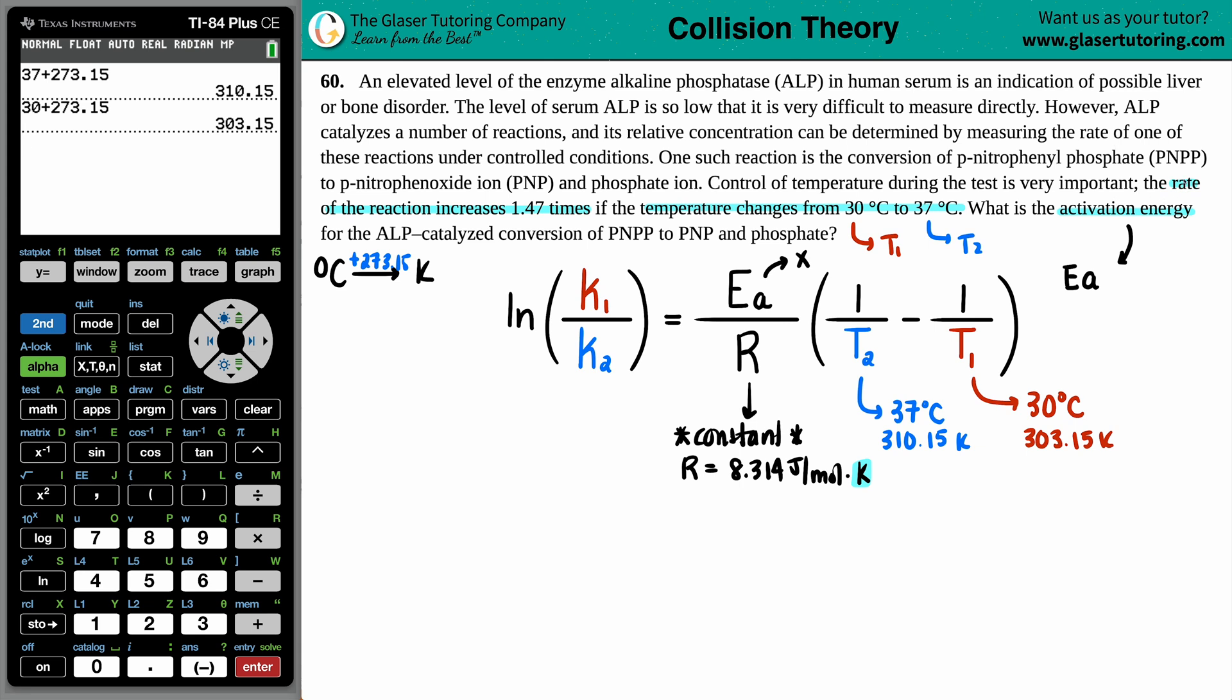So it just depends on what values they give you. Now, in this case, the only thing that they told us was that the rate of the reaction increases. So they're talking about literally the rate. So maybe what I can do is I can just make this a little bit better by saying for this specific example, we're going to be talking about the rate of 1 over the rate of 2.